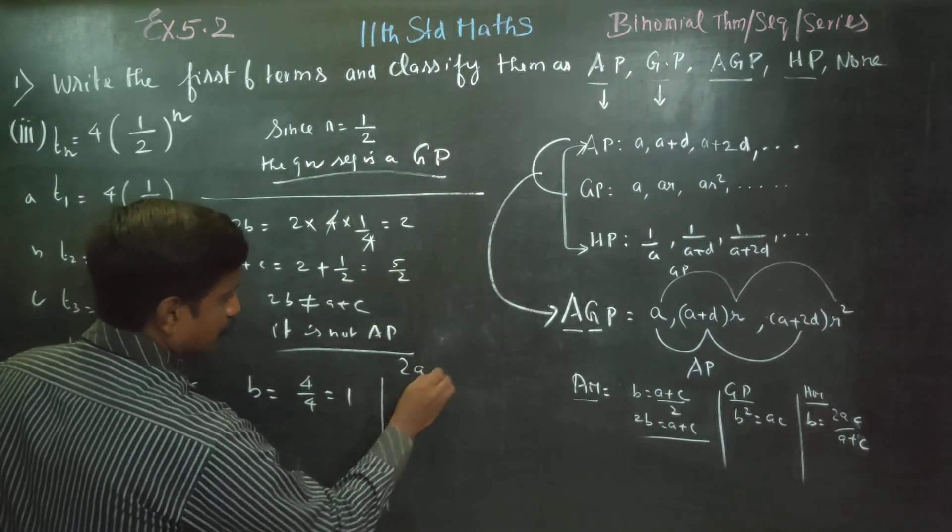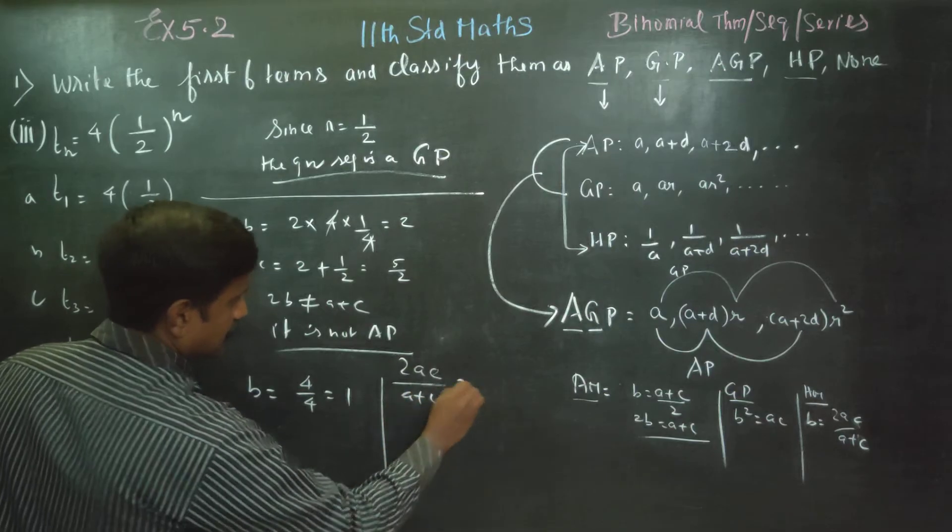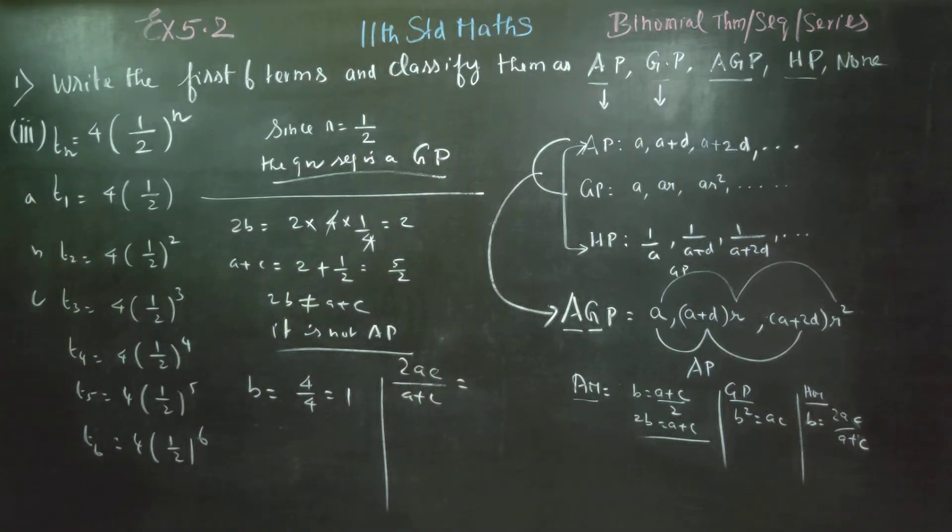2 AC by A plus C. Harmonic progression check. Actually, AP reciprocal, it is a harmonic progression.